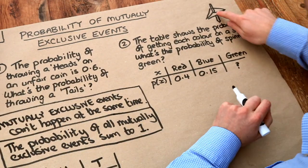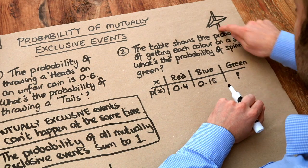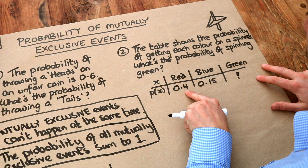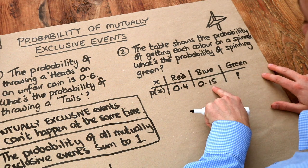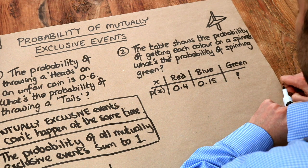Now what about this one? We've got a spinner with red, green and blue. The probability of getting red is 0.4, the probability of getting blue is 0.15, and we're trying to find the probability of getting green.